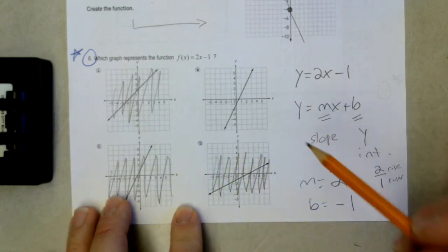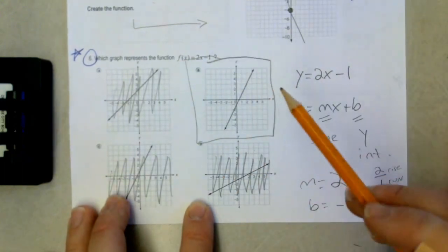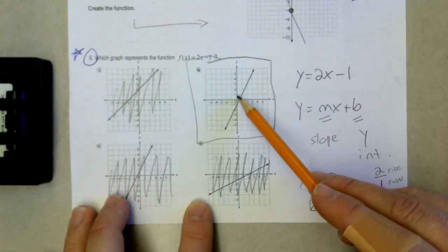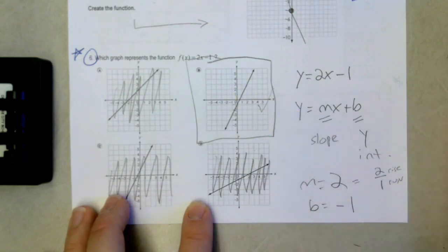Well, let's confirm it, right? I have a y-intercept of negative 1. It is up 2 over 1, up 2 over 1. Guess what? We found our line.